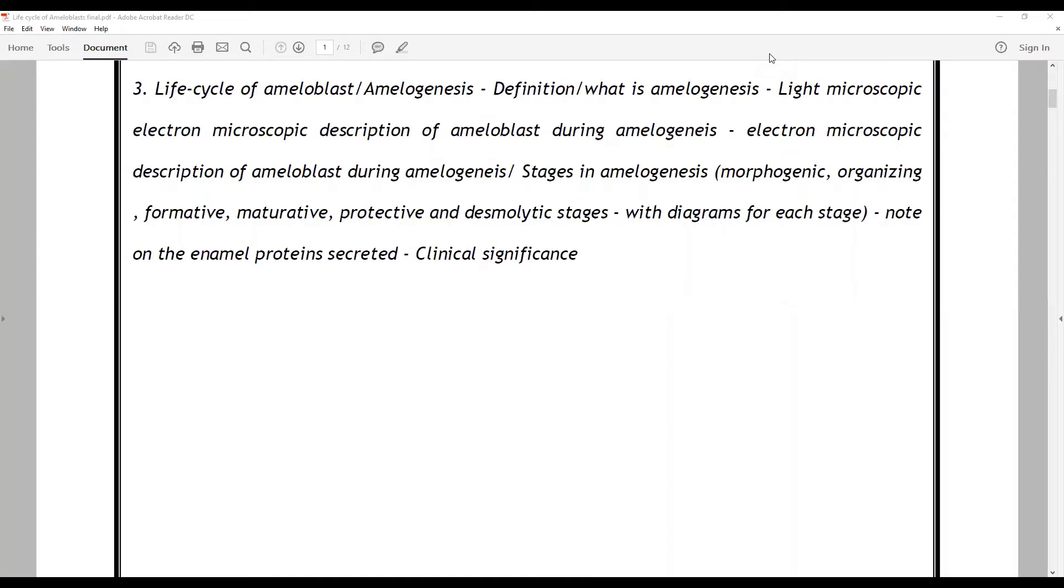In the life cycle of ameloblast, we discuss in detail the morphological and histological changes in different stages of the lives of ameloblast. Whereas amelogenesis is the same phenomenon from an enamel matrix and enamel calcification perspective. So the perspective alone differs, and the classification and approach also differs, but both are important questions from exam point of view.